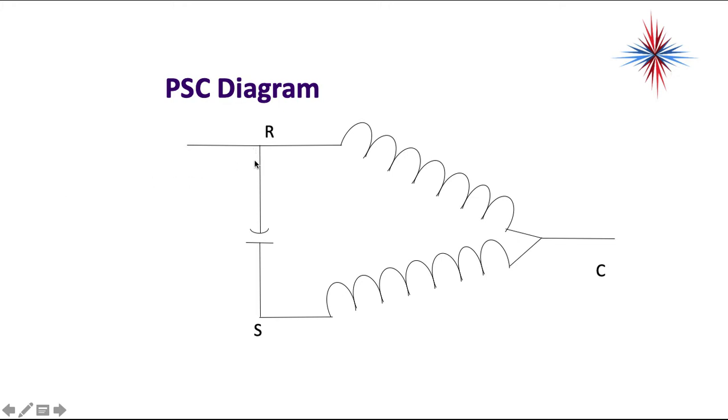Now the difference is we have a run capacitor that is wired in series and if you look at this electronically this is in series with the start winding. There's no switch here so when this motor's running that capacitor and that start winding is constantly getting power.